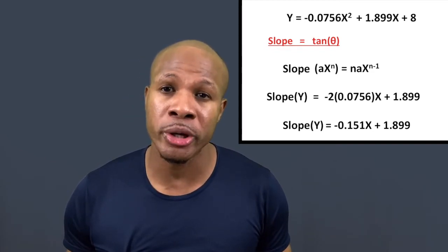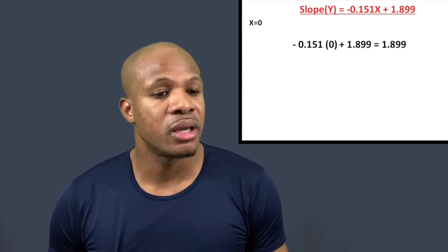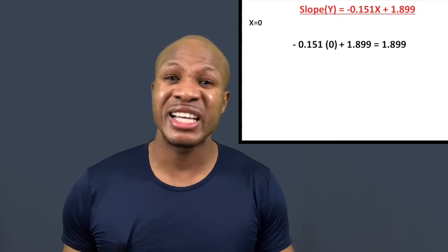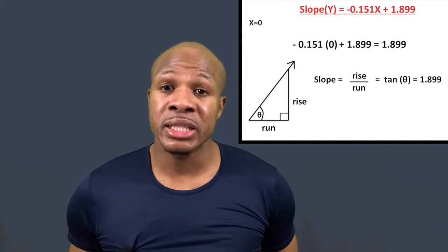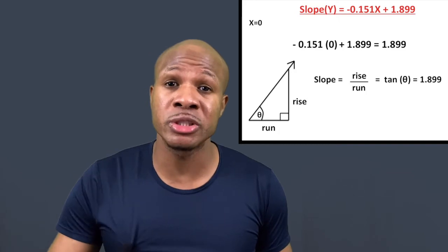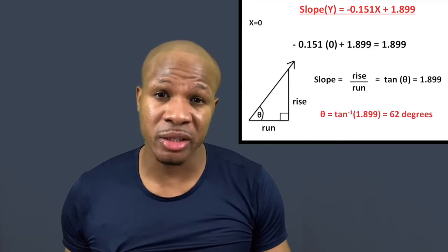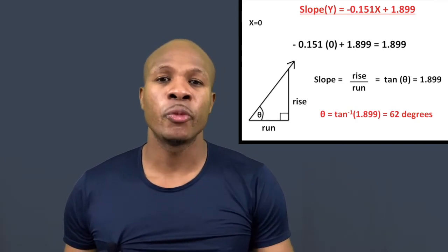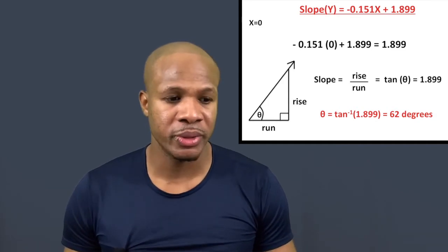To find the release angle, we plug x = 0 into the derivative and get a slope of 1.899. Since slope equals rise over run, which equals the tangent of the angle, we take the inverse tangent: θ = arctan(1.899) ≈ 62 degrees. So LV released the ball at an angle of 62 degrees.